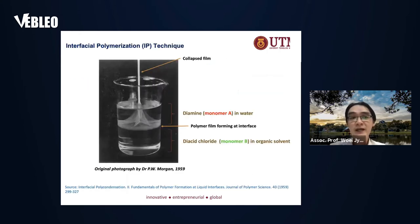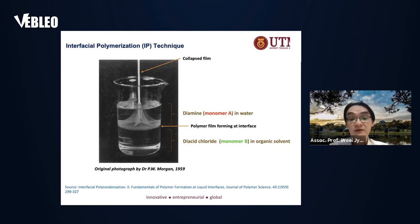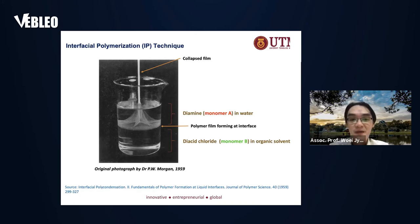This technique we normally call interfacial polymerization. It was invented by Dr. Morgans in 1959. This is an original photograph taken by Dr. Morgans. What he demonstrated is when you have two monomers — monomer A and monomer B — at different phases, and when these two monomers meet with each other at the interface, they are able to form a very thin polyamide. And as soon as you have a polyamide, it will continue to form until one stage and then it will stop.